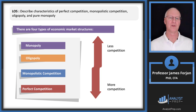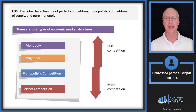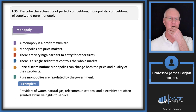All the way down to perfect competition, which implies that firms really can't do anything they want to do — they are market takers. So there's a huge difference between the monopoly at the top and perfect competition at the bottom. Let's describe the characteristics of each of these types of structures.